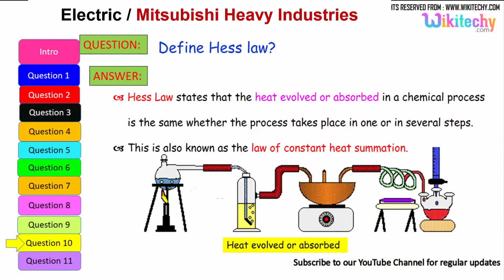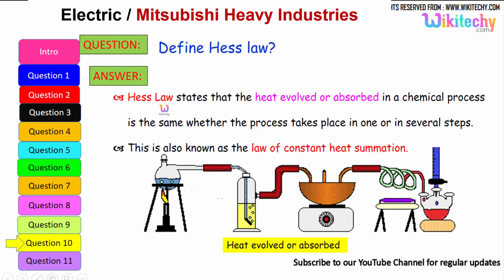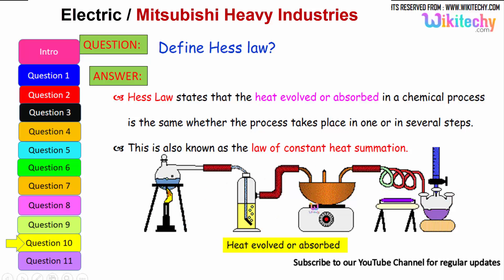Define Hess's law — this is one of the very important questions. Hess's law states that the heat evolved or absorbed in a chemical process is the same whether the process takes place in one step or in several steps. This is also known as the law of constant heat summation.